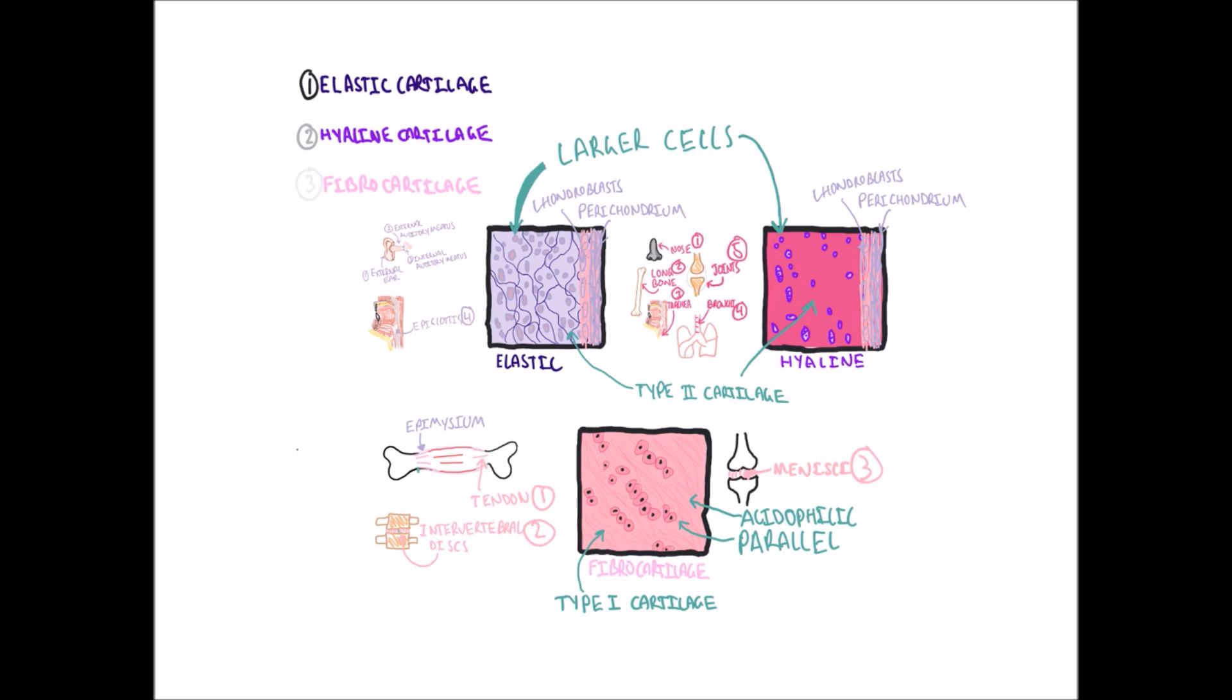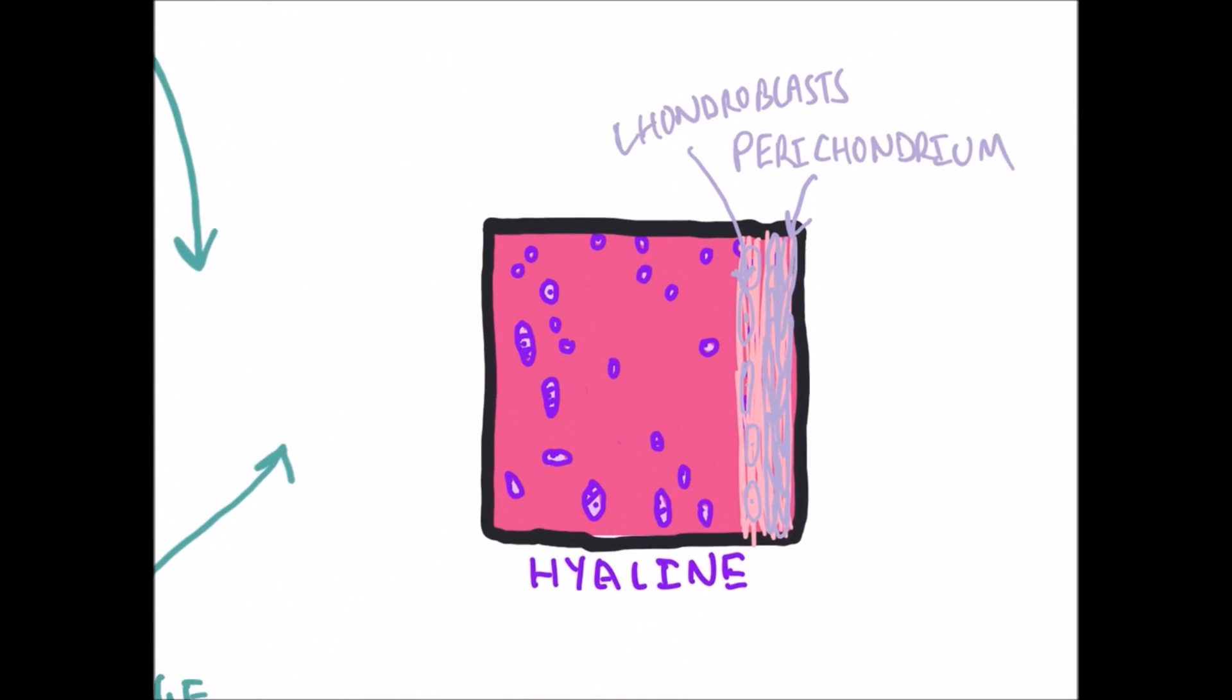Two last notes about fibrocartilage and hyaline cartilage. Fibrocartilage is present in tendon as we already discussed. Tendon attachment to bones are often referred to as enthesis, from Greek meaning set within. Therefore, fibrocartilage is often referred to as fibrocartilaginous enthesis.